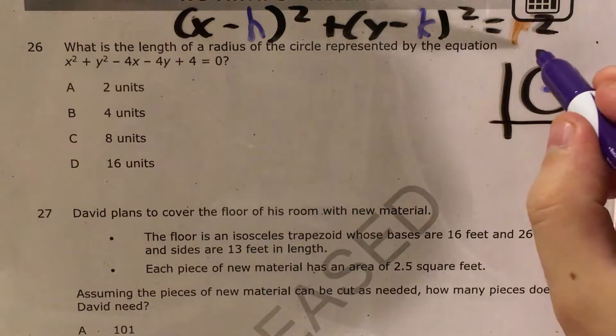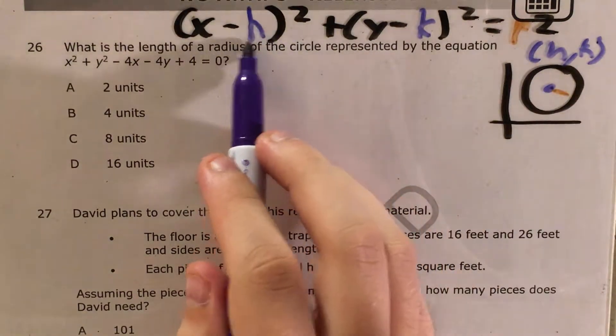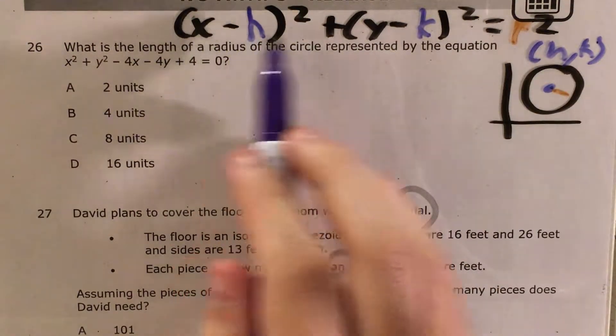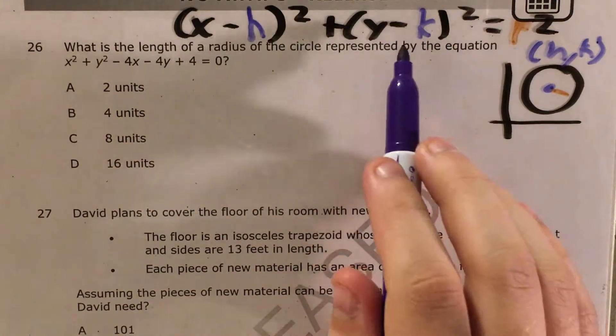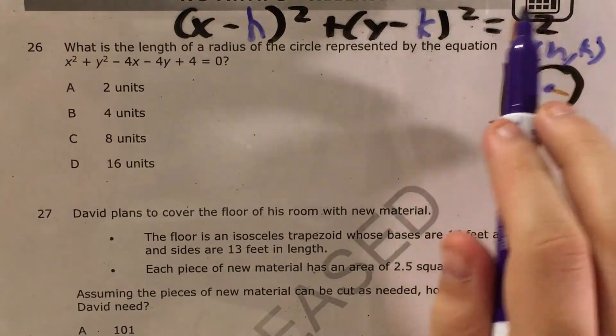Our circle is at the point made by whatever we're subtracting from x is our x-coordinate and whatever we're subtracting from y, that's our y-coordinate. And then we'll have a number here on the end, which is the square of our radius.